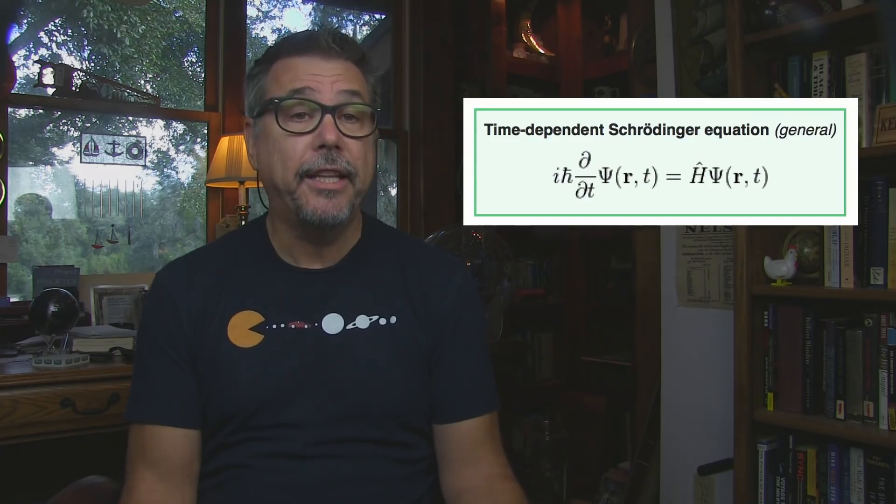Cutting a really long story short, Schrödinger's equation describes the wave-like properties that all matter has. It answered the question: what does the wave-like property of a particle look like mathematically? Well, it looks like this.